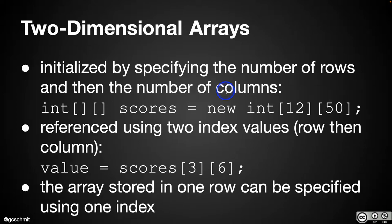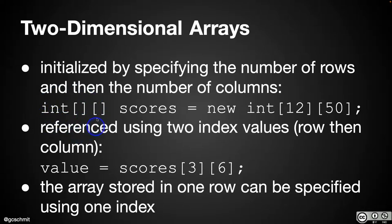The syntax: if we want to declare a variable whose type is a two-dimensional array, we just add an extra pair of square brackets. We can think of this as an array of integer arrays, or an array of arrays of integers. When we actually create the new array, we specify in the first pair of square brackets the number of rows, and in the second pair the number of columns. So this would create a 2D array with 12 rows and 50 columns.